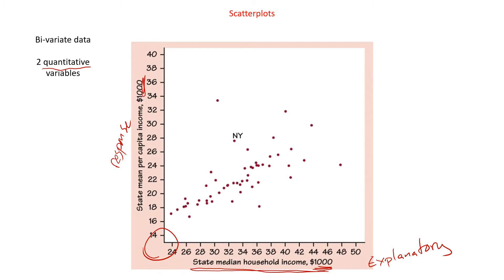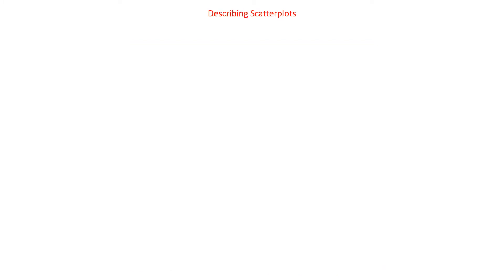Those are scatter plots. You have made scatter plots in the past. So, describing scatter plots — we have a few different ways. We have the direction. The direction is either going to be positive or negative.